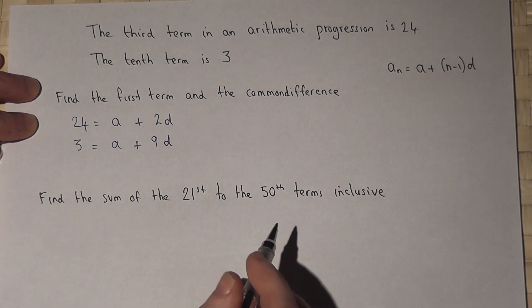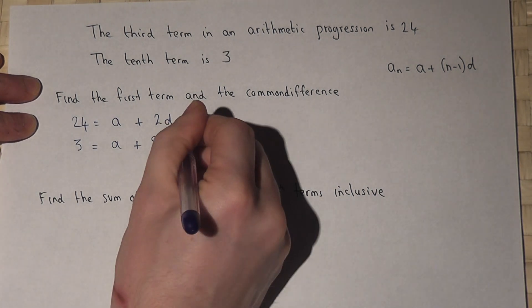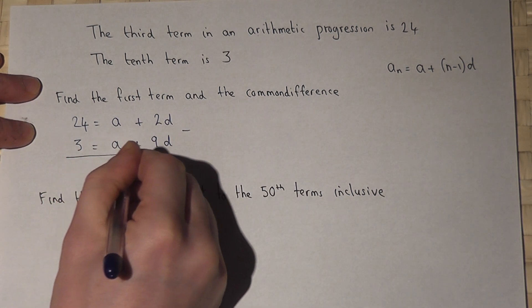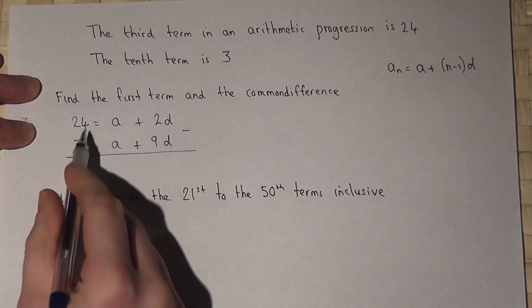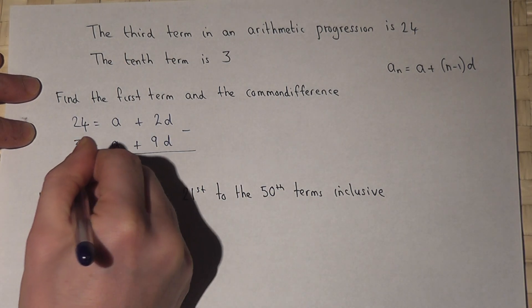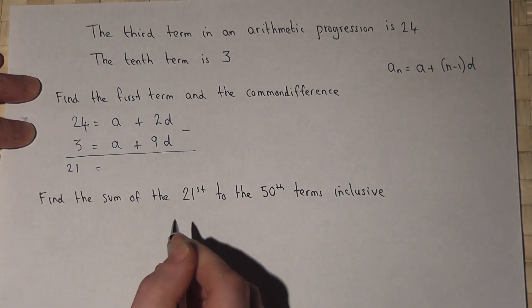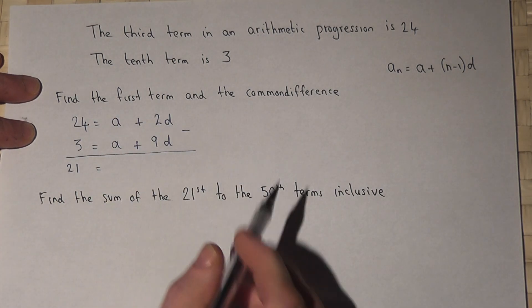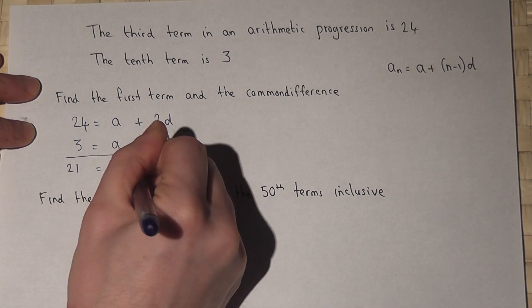So we've got two equations there. If I subtract the equations from each other, 24 take 3 is 21, a take a cancels out, 2d take away 9d is minus 7d.